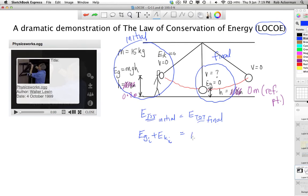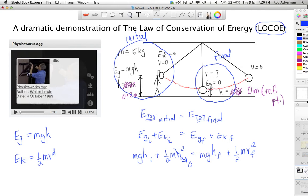And we're done adding up the totals for the initial side. Now, we then put them again on the final side like this. And then what we do is we have to remember what we learned in the last video. So, EG is equal to MGH and EK is equal to a half MV squared. So, now we go and sub those in. EG initial will be MGH initial. EK initial will be a half MV initial squared. EG final will be MGH final and EK final will be one half MV final squared.